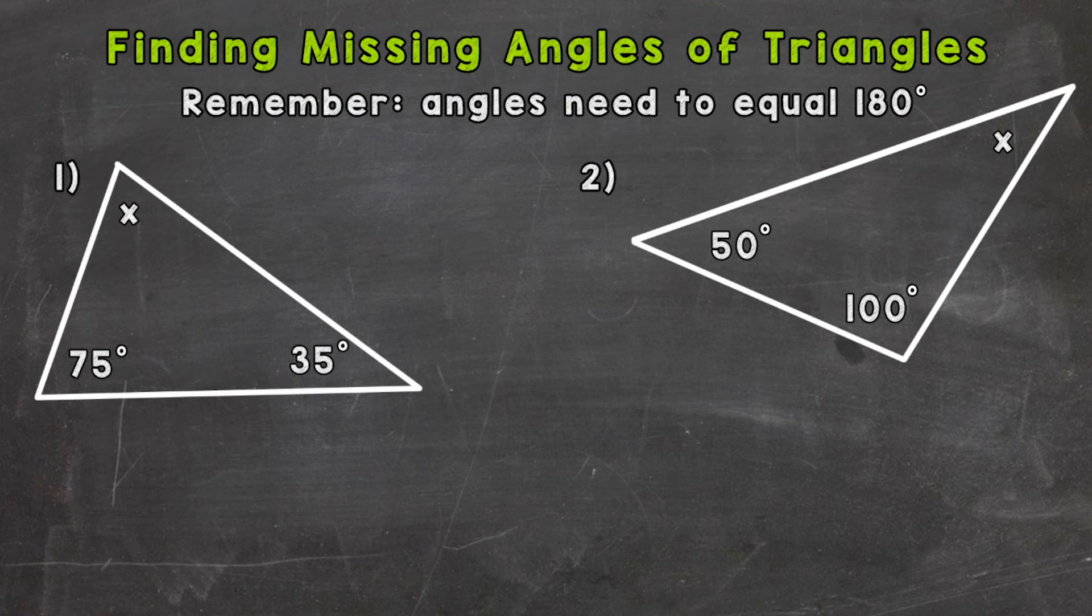As you can see, there are two triangles on your screen with an X in place of one of the angle measures. So those are our missing angles that we need to find.